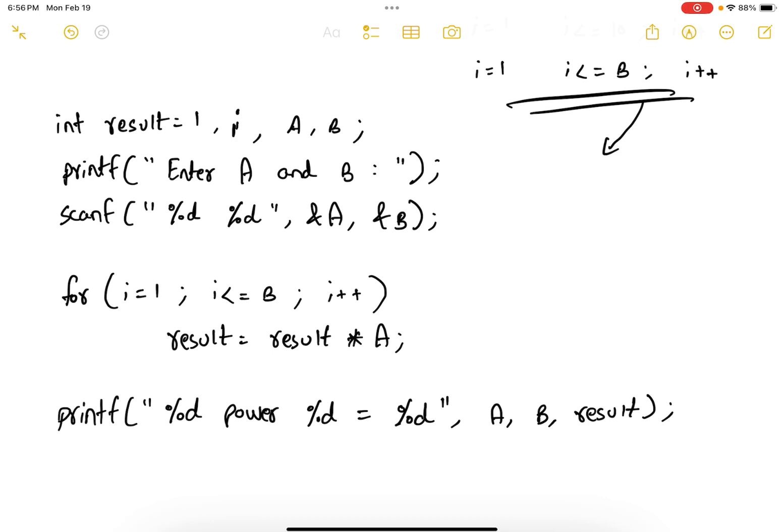Just like the previous factorial problem, I want you to analyze this code by drawing lines. Take some random values for a and b. Do not take large values, probably take something like 3 and 5 for a and b or 5 and 3 for a and b, and see how the code runs.